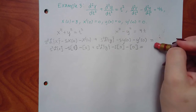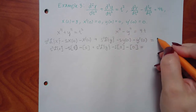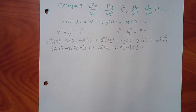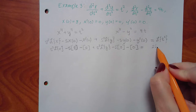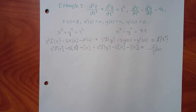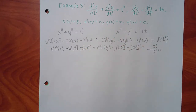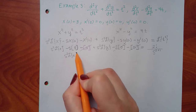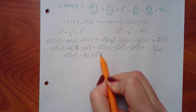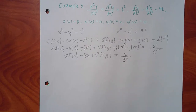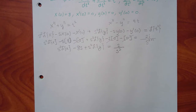I also have to Laplace the right-hand side. The Laplace of t squared uses the formula: that power factorial over s to that power plus one. So we get 2 over s cubed. Because of the zeros, the only remaining term is the 8s, giving us: s squared·L{x} plus s squared·L{y} equals 2 over s cubed.